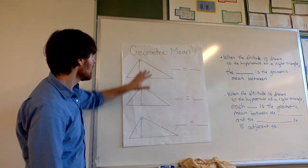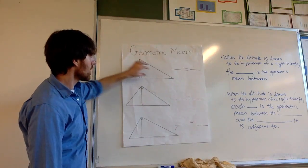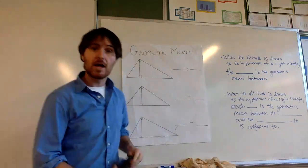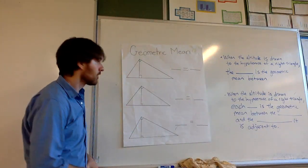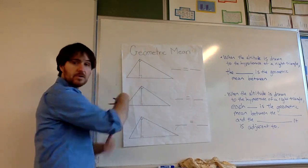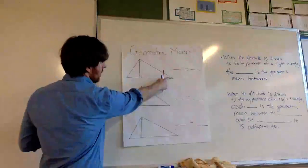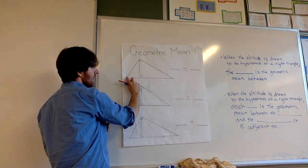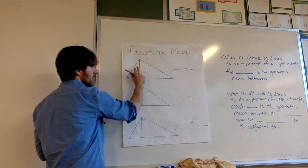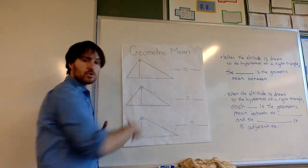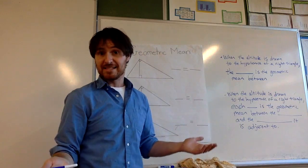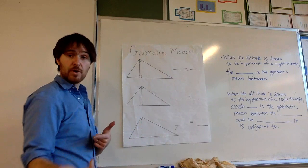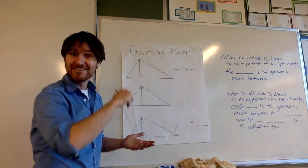Some interesting things come into play. I have one small triangle, a medium triangle, and then a large triangle on the outside. All three of those triangles are similar to one another through AA. There's a right angle in each one, and we share an angle between the large and medium triangle, and between the large and small triangle. The small and medium triangle are similar through transitivity.